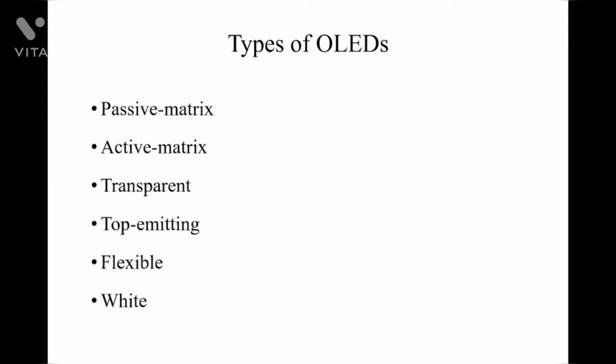Now we will see the types of OLEDs: passive matrix, active matrix, transparent, top emitting, flexible, and white.